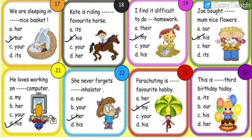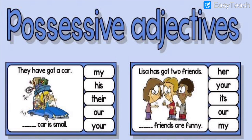Number twenty-four: this is dash third birthday today. A boy is shown, so we use 'his.' It is his third birthday today. Now let us solve an exercise based on possessive adjectives.